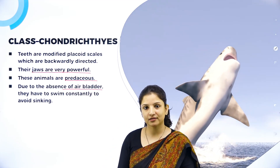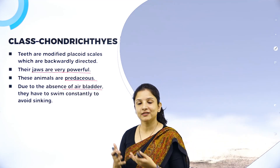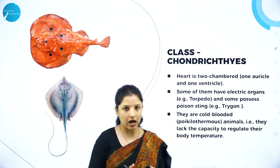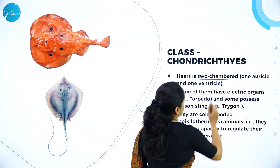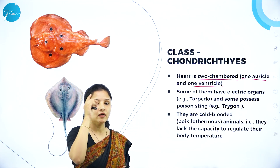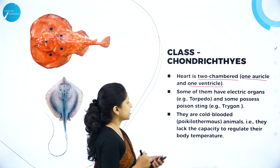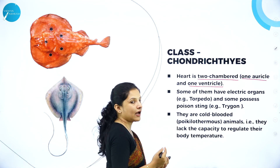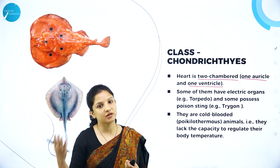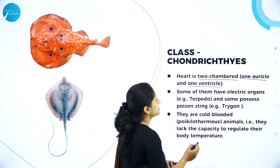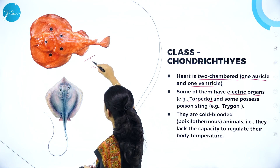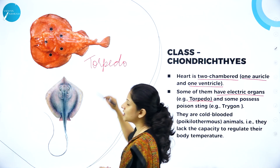Sharks like tiger sharks, hammerhead sharks, and sawfish — all these come under Chondrichthyes and continuously have to swim. They have a two-chambered heart: one auricle and one ventricle. Some of the Chondrichthyes have special structures to protect themselves from other predaceous animals. Some of them, like torpedo, have electric organs which give a shock when touched, so that other organisms do not dare to go near them.